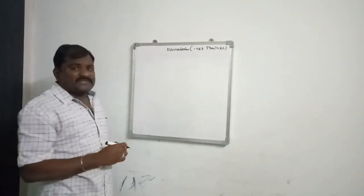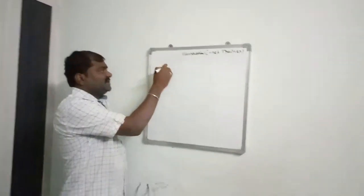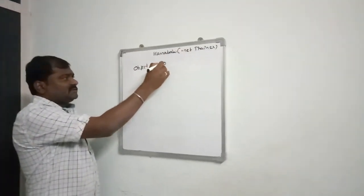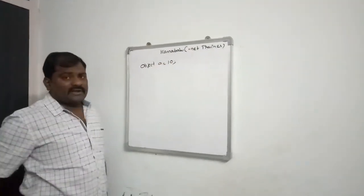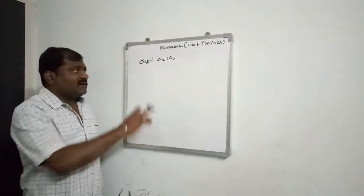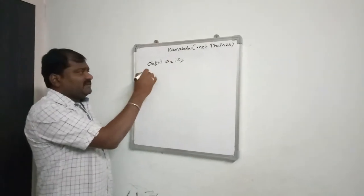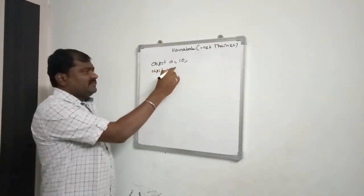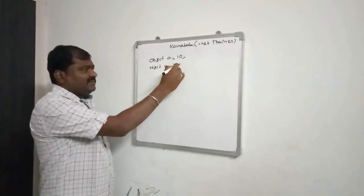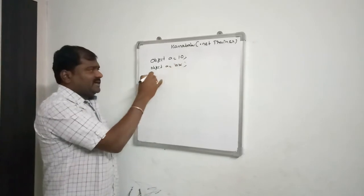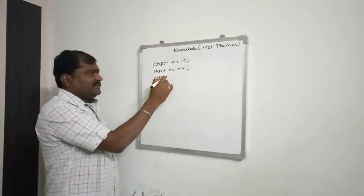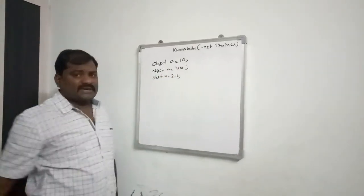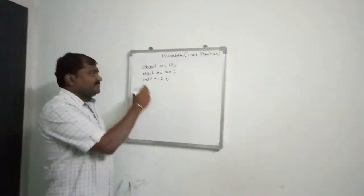There is one special data type in .NET called object data type. We can store any type of value in object type. Object a = 10 — valid. Object a = 'abc' — valid. Object a = 2.3 — valid. We can store any type of value in object type.